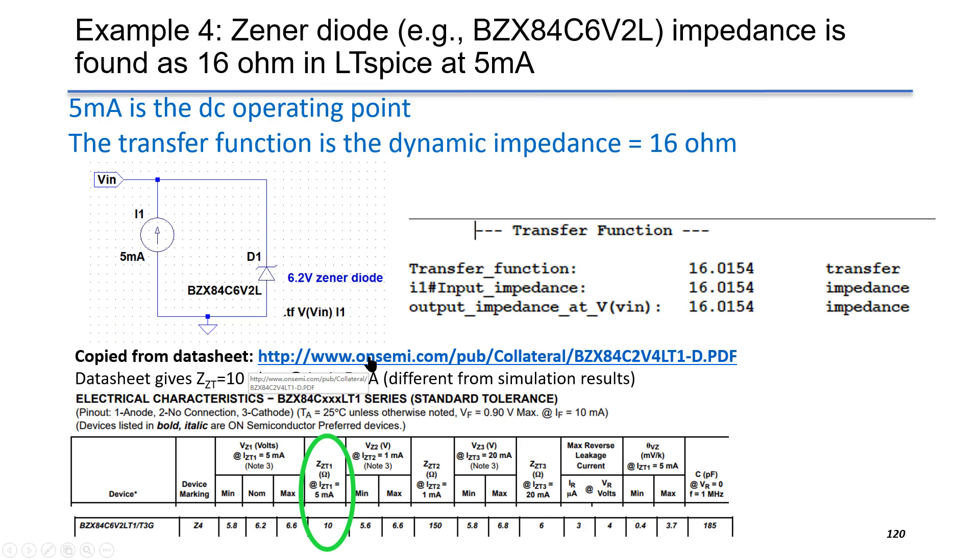the Zener diode can clamp its terminal voltage within a small range. This is example number 4. We want to measure the Zener's dynamic impedance. We use the transfer function syntax to find the transfer function, where V in is the output equal to the terminal voltage of this Zener diode, and I1 is the input current. The result is known as the Zener impedance.